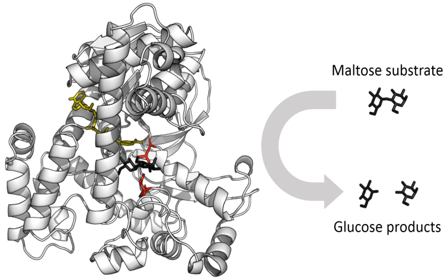Allosteric sites are pockets on the enzyme, distinct from the active site, that bind to molecules in the cellular environment. These molecules then cause a change in the conformation or dynamics of the enzyme that is transduced to the active site and thus affects the reaction rate of the enzyme. In this way, allosteric interactions can either inhibit or activate enzymes. Allosteric interactions with metabolites upstream or downstream in an enzyme's metabolic pathway cause feedback regulation, altering the activity of the enzyme according to the flux through the rest of the pathway.